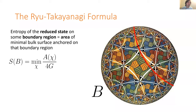One very important element of the dictionary from the last decade and a half is the Ryu-Takayanagi formula, which basically says: if you take some sub-region of the boundary — say this region B that I've drawn here — then you can consider the von Neumann entropy of the reduced state of the boundary theory on that sub-region.